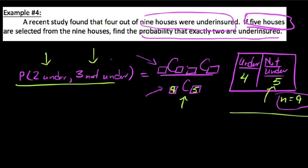Now, to do these things for the top, we'll just crawl through one category at a time, starting with this. We had four underinsured houses, four of them, and we wanted to choose two. And we had five that were not underinsured, and we wanted to choose three of those.